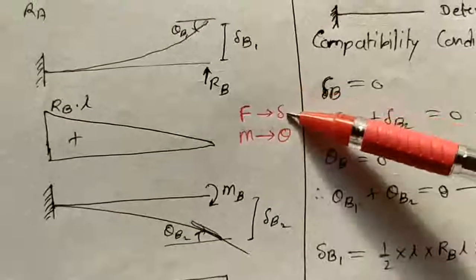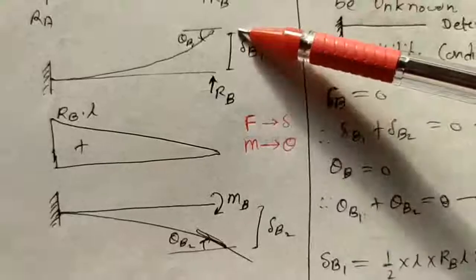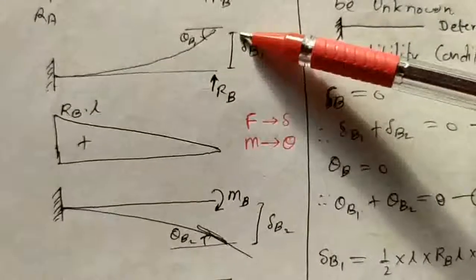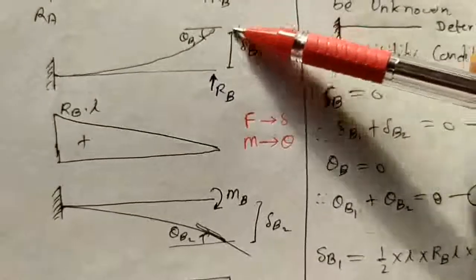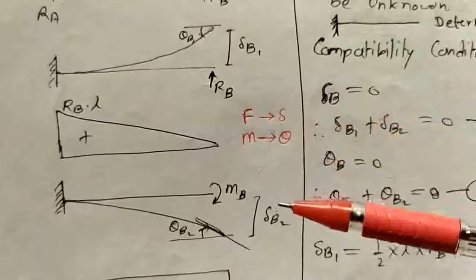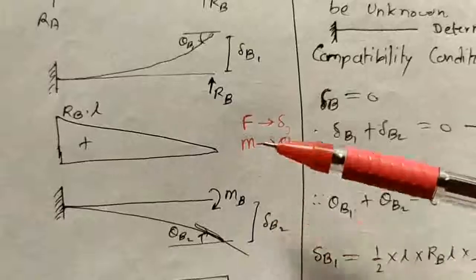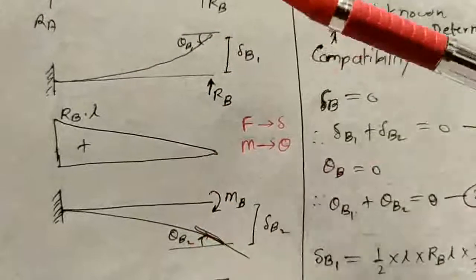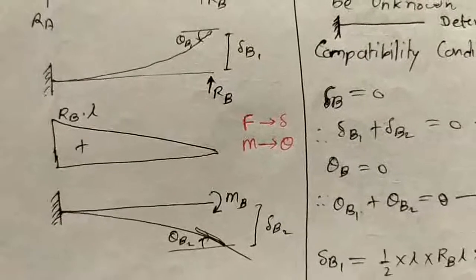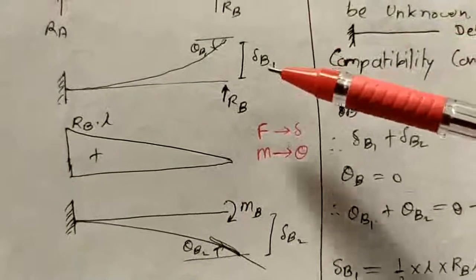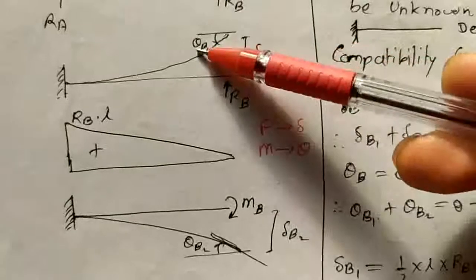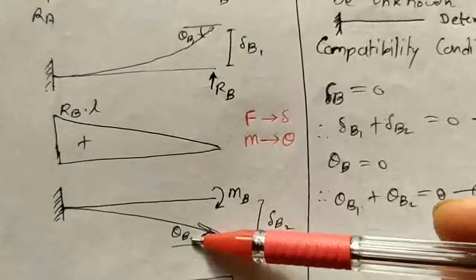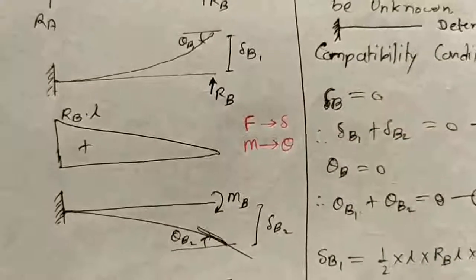Because of the unknown force RB, we get upward displacement, so take this as positive. Displacement in the direction of the unknown is positive, so delta B1 is positive and delta B2 is negative. For the second sign condition, delta and theta are taken in opposite directions to each other: since delta B1 is positive, theta B1 is negative; since delta B2 is negative, theta B2 is positive.